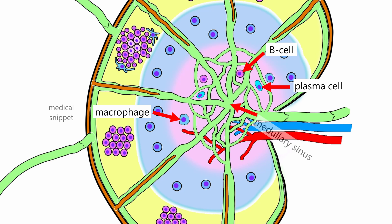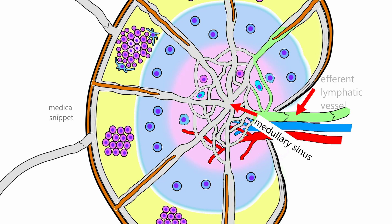Medullary sinuses separate the medullary cords. Medullary sinuses are spaces within the medulla, and they receive lymph from the trabecular sinuses and subcapsular sinuses. The medullary sinus drains the lymph into the efferent lymphatic vessels.